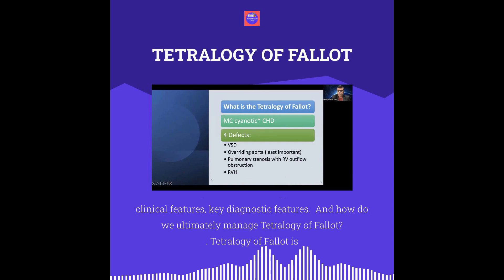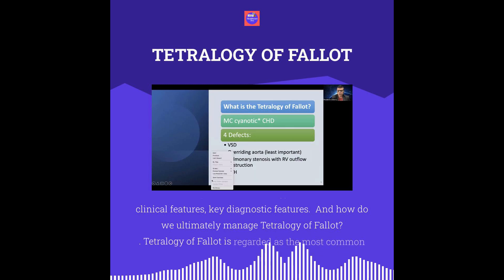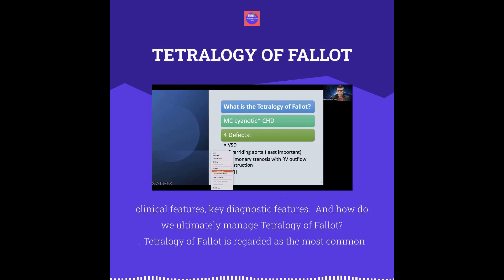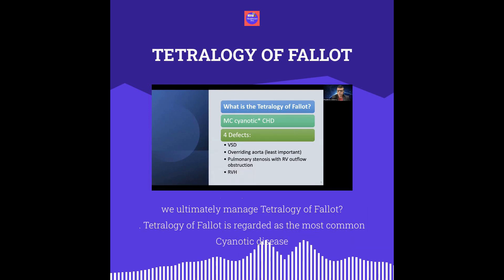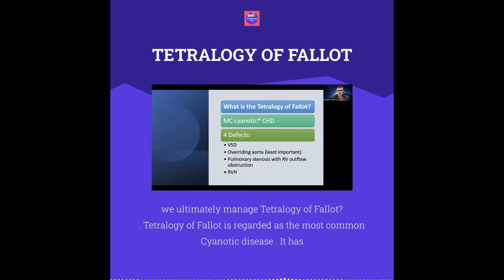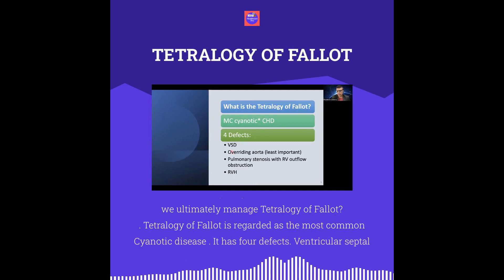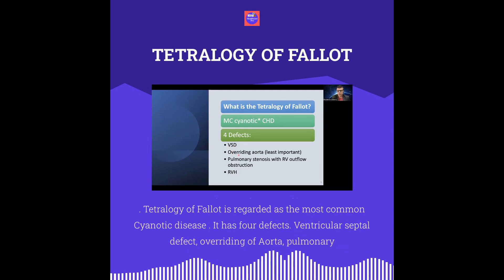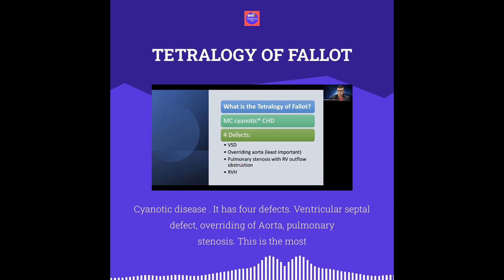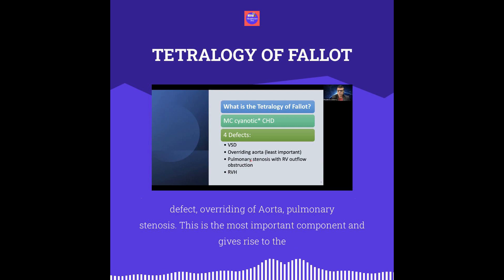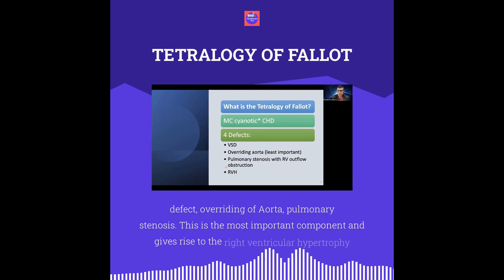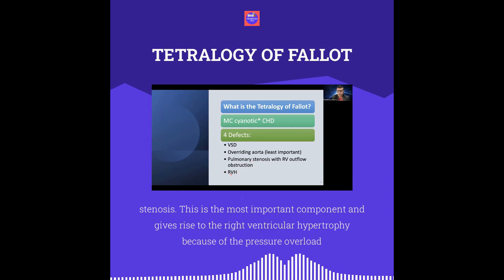Tetralogy of Fallot is regarded as the most common cyanotic disease. It has four defects: ventricular septal defect, overriding of the aorta, pulmonary stenosis — which is the most important component — and right ventricular hypertrophy, which arises due to pressure overload of the right ventricle from the pulmonary stenosis.